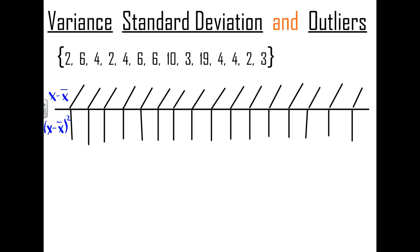There are a lot of calculations here. We're not going to do this by hand every time, but I'm going to do it once by hand to show you how it all works. Each element of our data set needs to be subtracted from the mean. Our mean is 5.4.